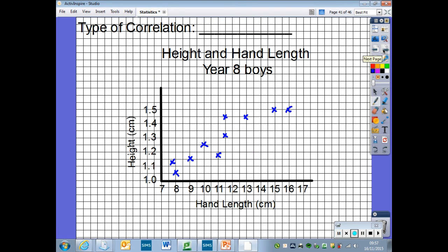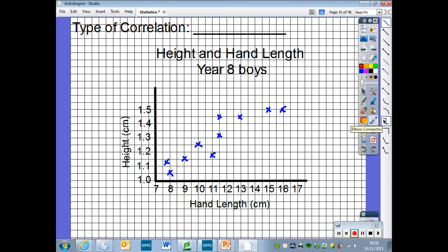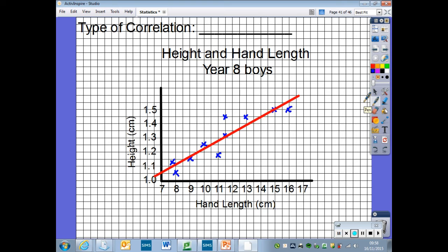The height and hand length of 10 boys in Year 8 were measured. The results are displayed in a scatter diagram. To decide whether there's correlation, we try and draw a line of best fit on the graph. Again, we're going to use a ruler and draw this through the centre of the points. We want to describe the correlation between the heights and hand lengths. What link, if any, can you see? The link is, the bigger your hand length, the bigger your height will be. In other words, as one set of data gets bigger, so does the other. This is a positive correlation.